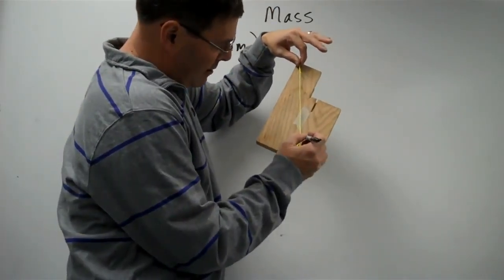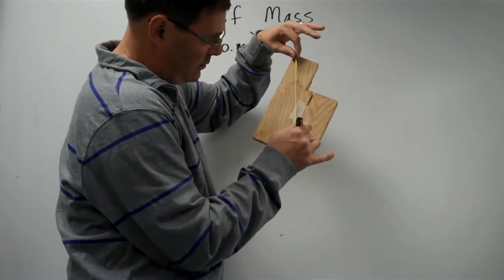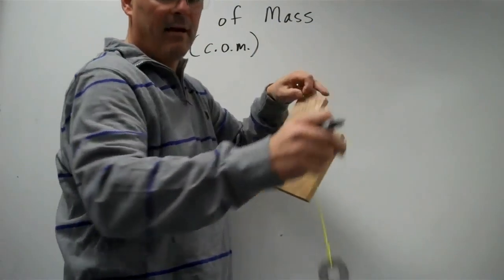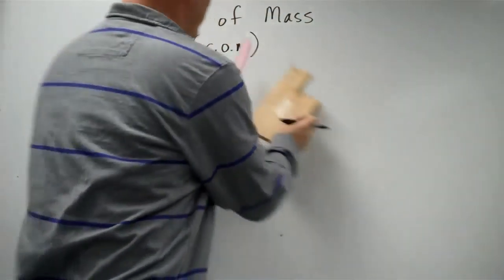So I'll draw a point where the string is, and then I'll connect that point with my ruler.